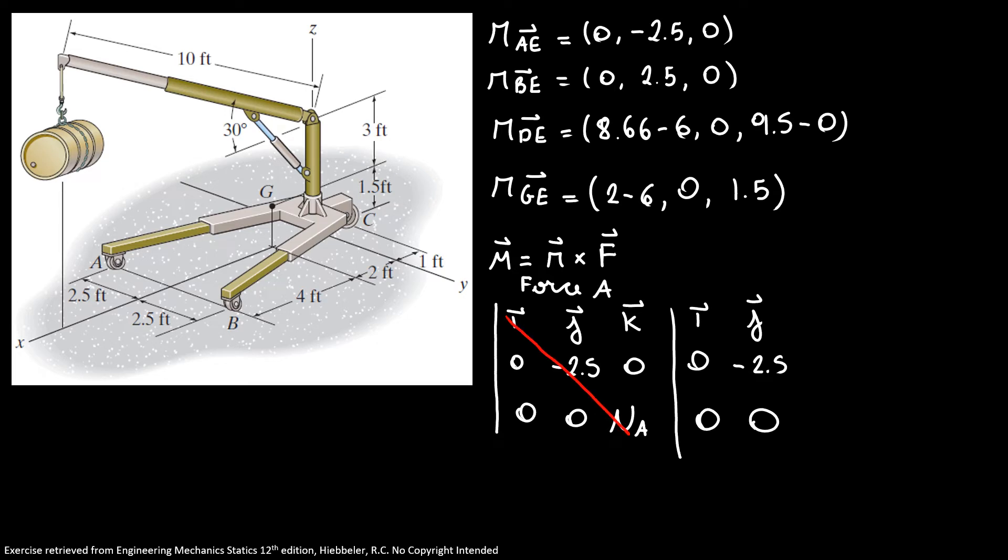So, here, our moment so far is -2.5 N_A in i direction, 0, 0, and here we have 0, 0, and 0. So, this is our moment.